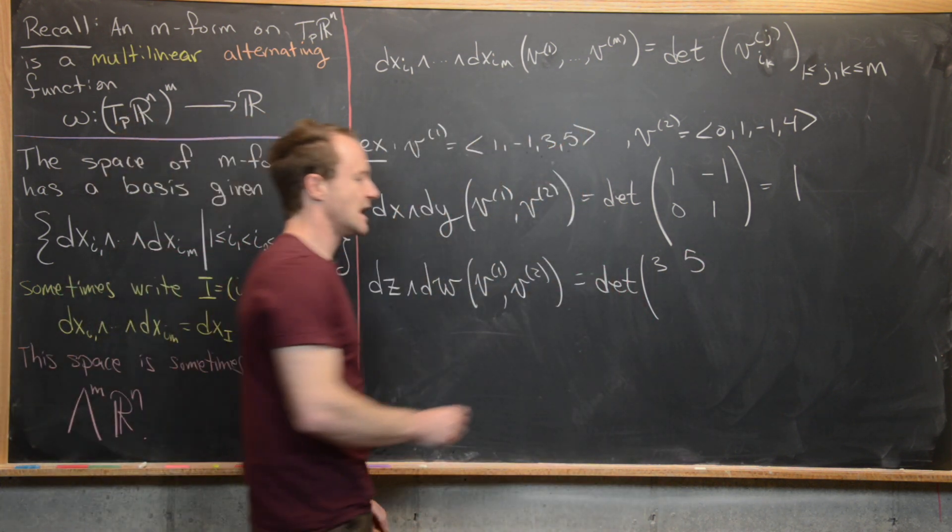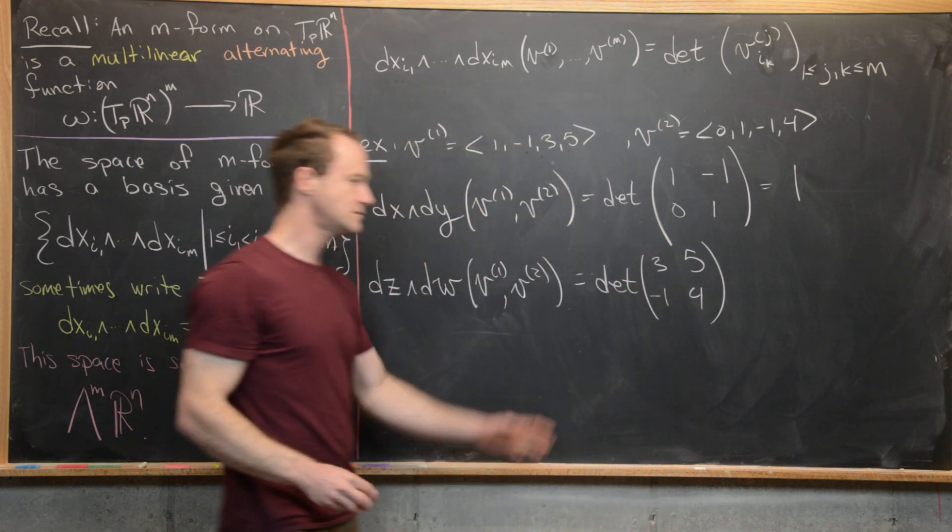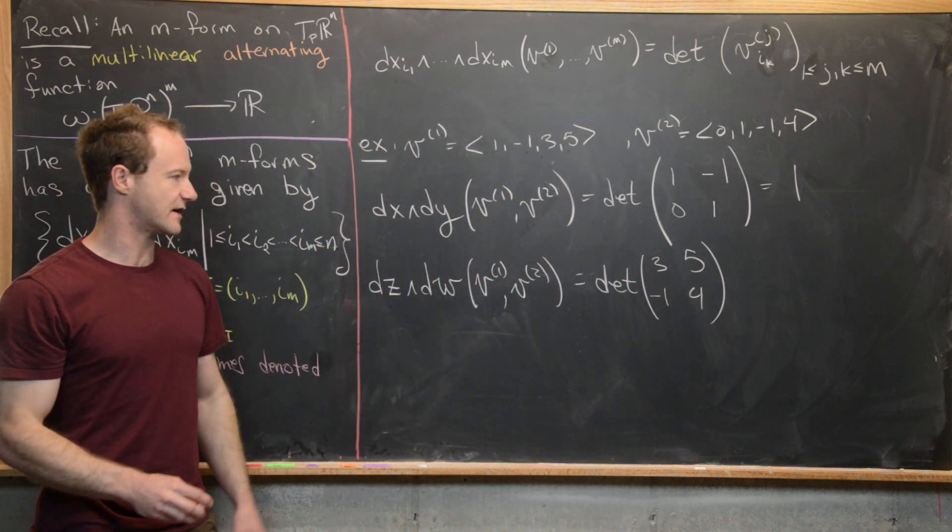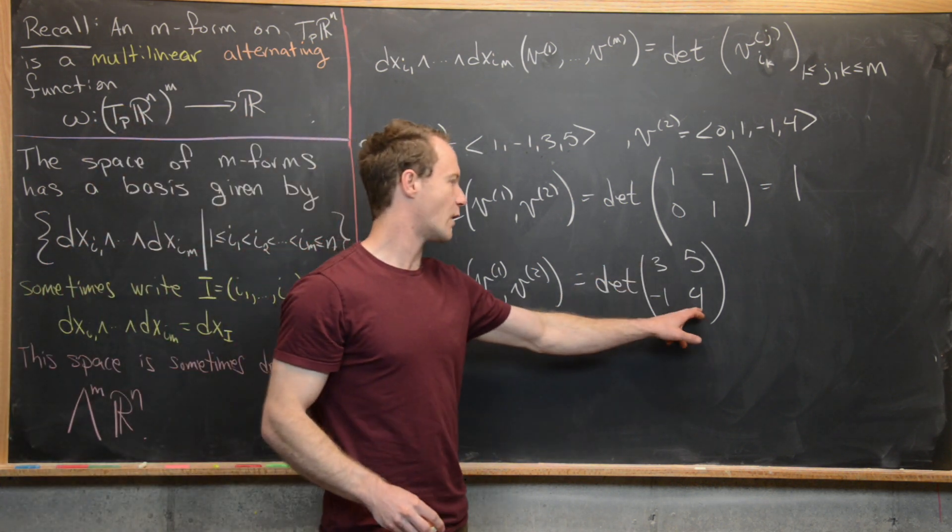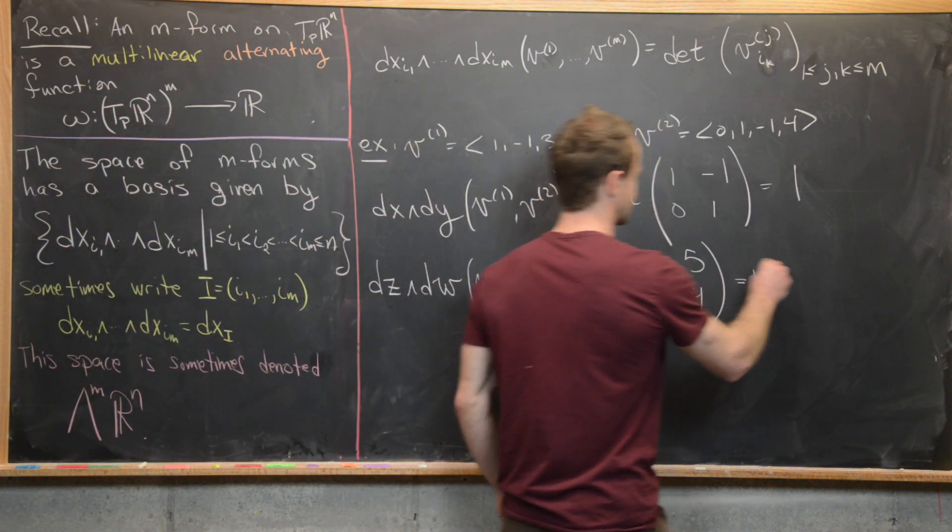So that's going to be the determinant of (3, 5). So we took the third and the fourth component for this first vector. And then (-1, 4). And then again, we can just use the standard definition of the determinant. So we have 12 minus negative 5. So that's going to be 17.